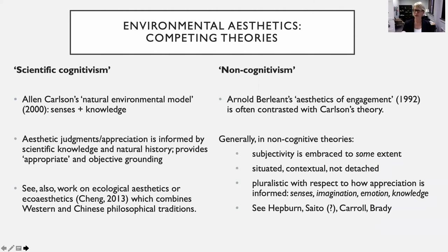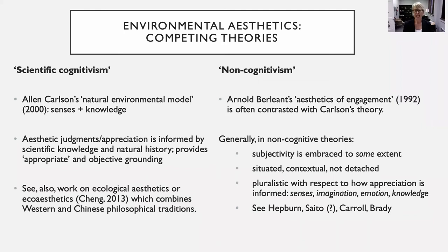Today I think it's safe to say that we have two categories of competing theories. On one hand we have scientific cognitivism, and on the other non-cognitivism. These terms have their own particular usage within environmental aesthetics. With scientific cognitivism, Alan Carlson is the main figure. He is a Canadian philosopher who developed the natural environmental model as a response to the scenery model. He argues for the senses as the starting point of our aesthetic experiences, but he also tries to understand how knowledge plays a role.